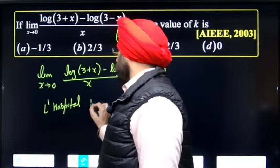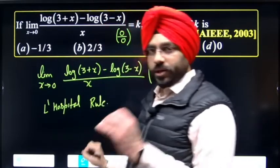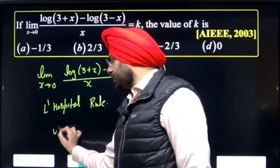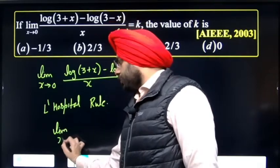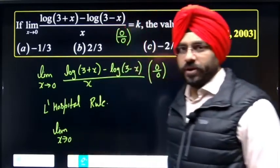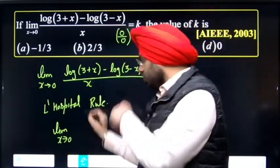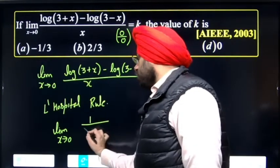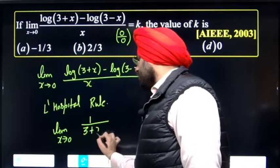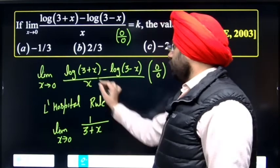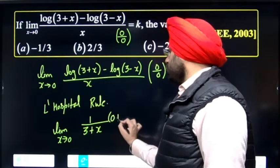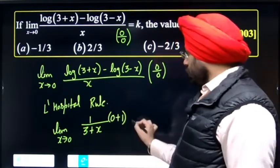With L'Hospital's Rule, you differentiate numerator separately and denominator separately. 1 upon, 1 by (3+x) times the differentiation of 3 is 0 and differentiation of x is 1, minus 1 upon (3-x).